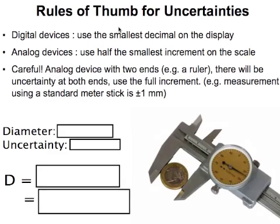When you're taking a measurement, there's a rule of thumb for what you record as the uncertainty. When you're using a digital device, it's always going to be the smallest decimal on the display. So if it measures 65.3, then it's plus or minus 0.1. Whereas with an analog device, usually you're going to measure half of the smallest increment on the scale. So in the previous example, it would be 65.3 plus or minus 0.05.